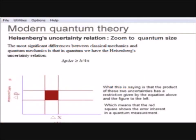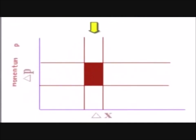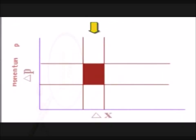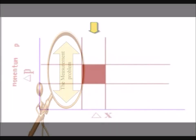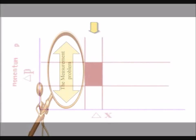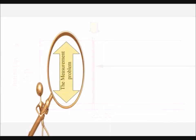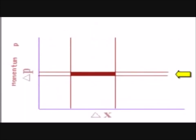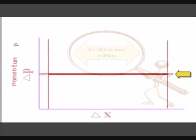In quantum physics, we have a problem — it's called the measurement problem. Put very simply, the more we know the position of a quantum particle, the less certain we are of the momentum. And if we know the momentum really well, then we can't be quite sure of the position.